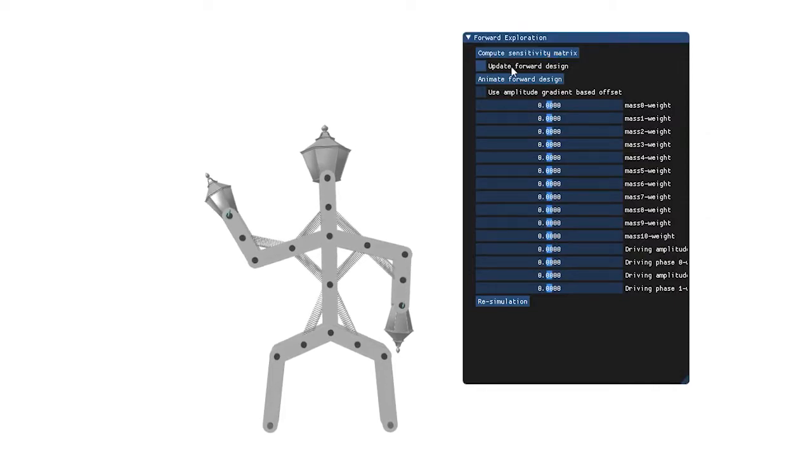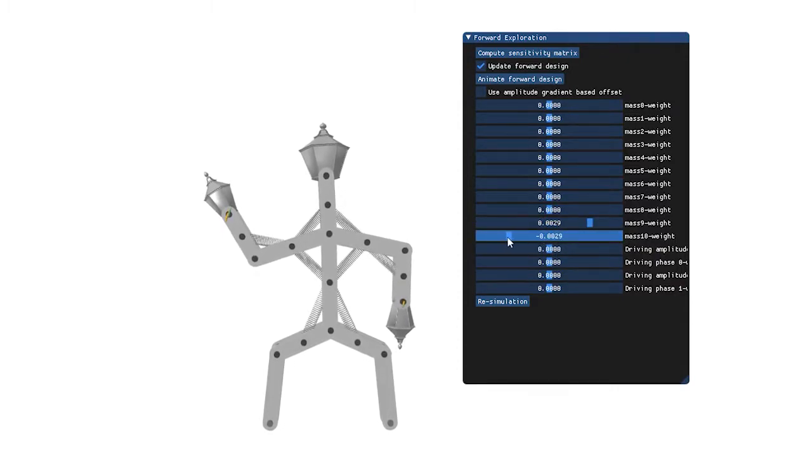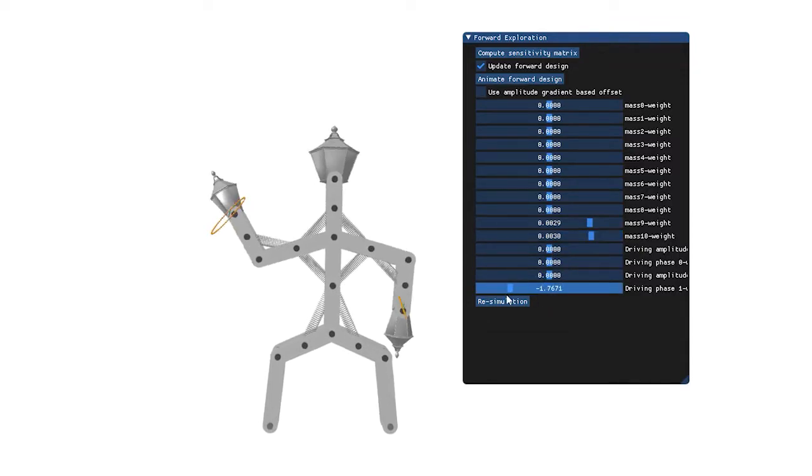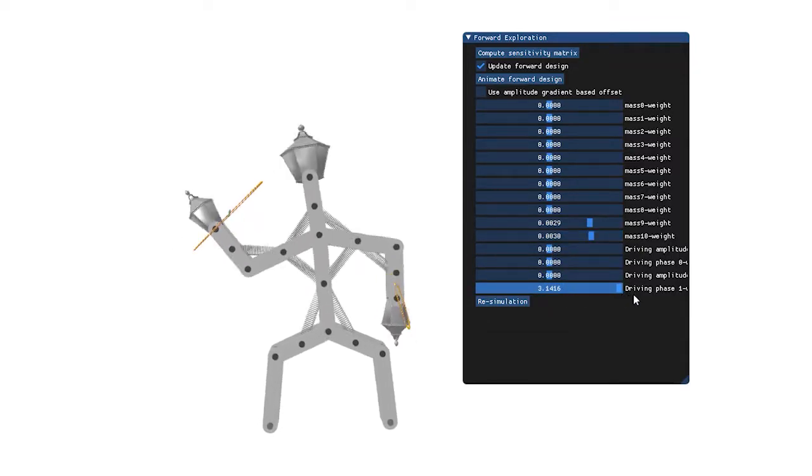The user explores parameter changes for nodal masses as well as driving amplitude and offset for the two feet. The predicted change in steady-state motion is shown immediately using the frequency space sensitivity matrix.